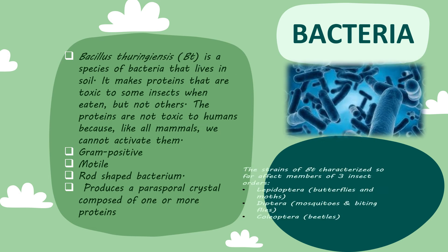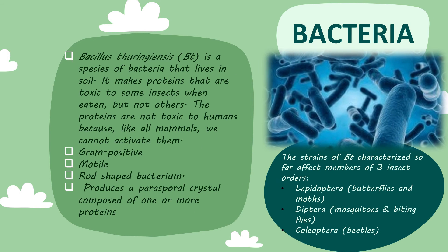The first one is bacteria. Bacillus thuringiensis is a species of bacteria that lives in soil. It makes proteins that are toxic to some insects when eaten, but not others. The proteins are not toxic to humans because, like all mammals, we cannot activate them. Bacillus thuringiensis is a gram-positive, motile and rod-shaped bacterium. It produces a parasporal crystal composed of one or more proteins. The strains of Bacillus thuringiensis affect members of three insect orders: Lepidoptera (butterflies and moths), Diptera (mosquitoes and biting flies), and Coleoptera (beetles).